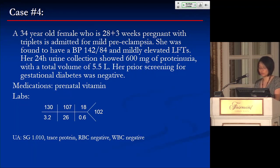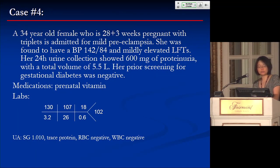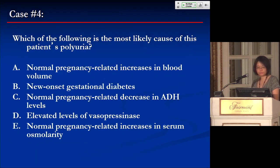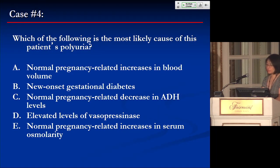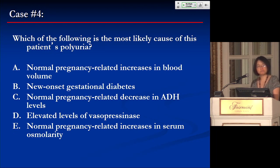Urinalysis: specific gravity 1.01, trace protein, RBCs negative, WBCs negative. Which of the following is the most likely cause of this patient's polyuria?